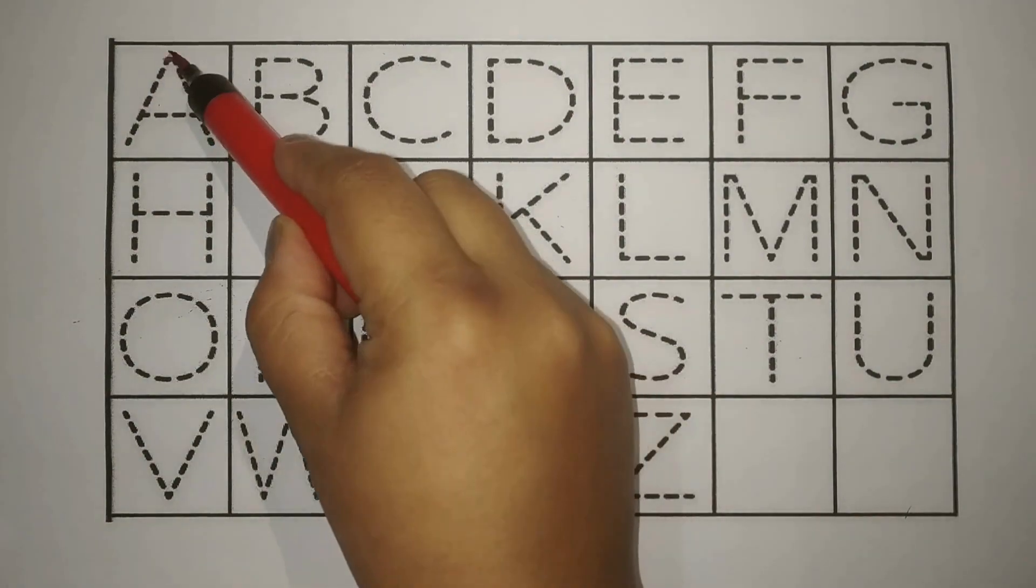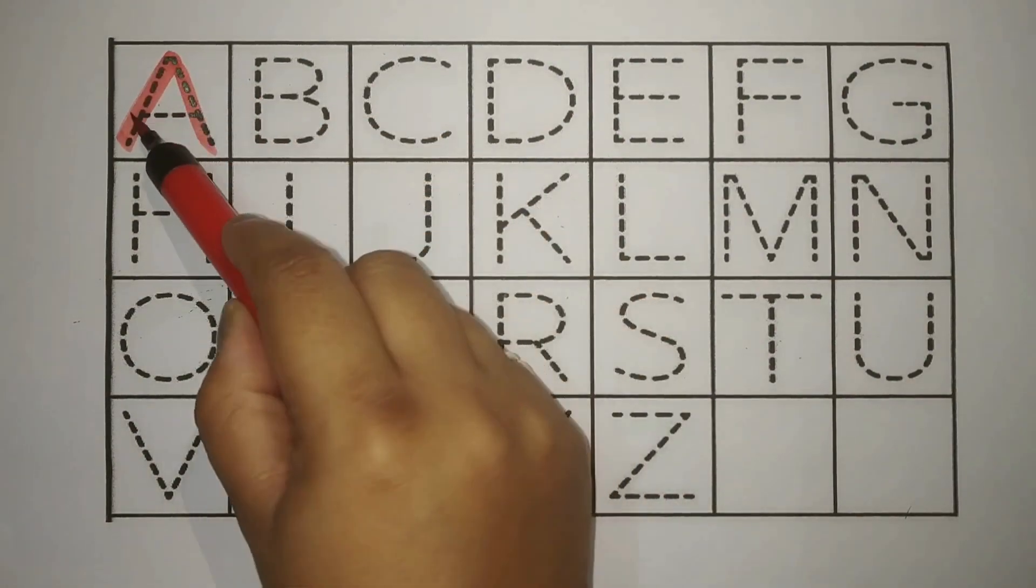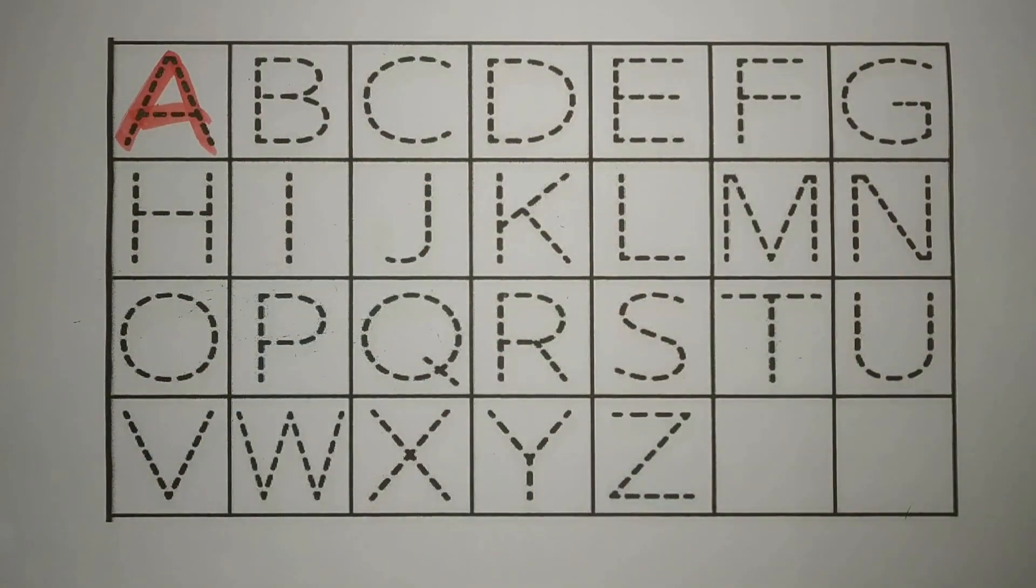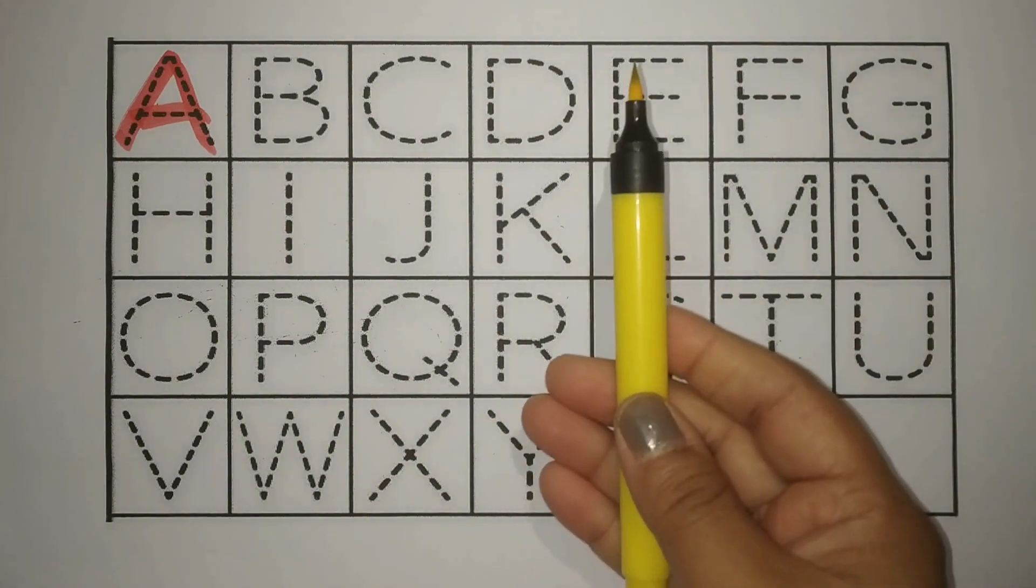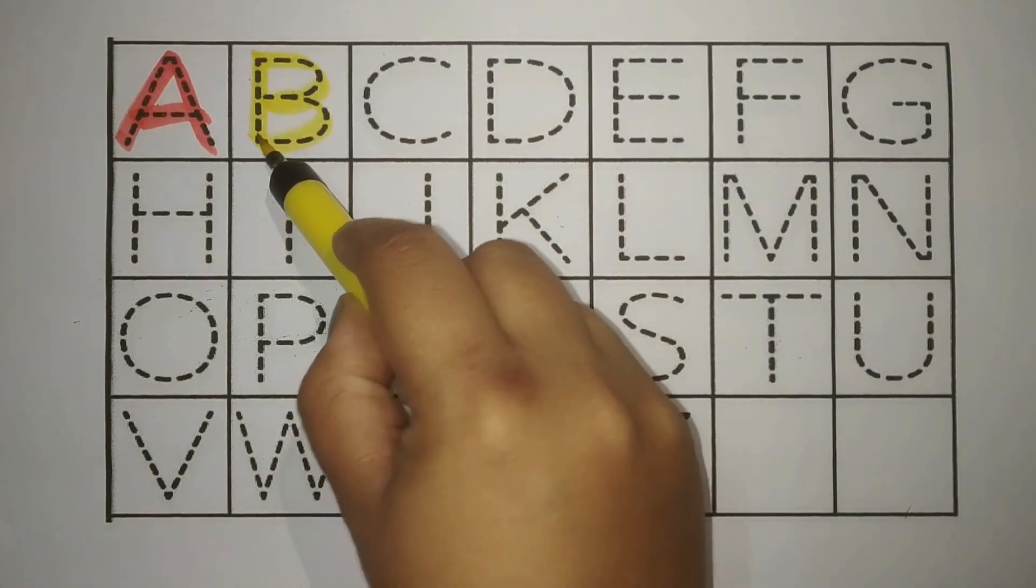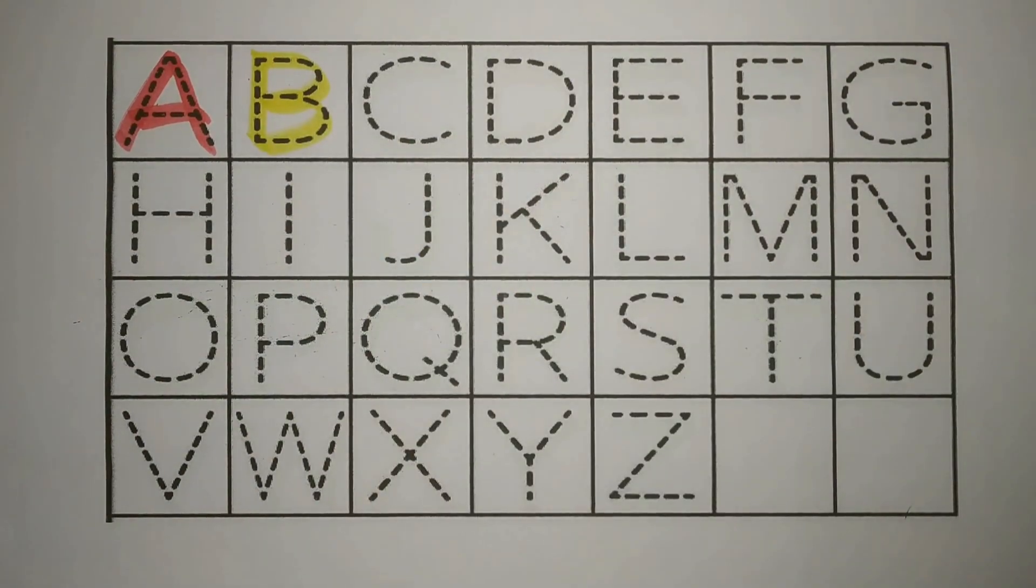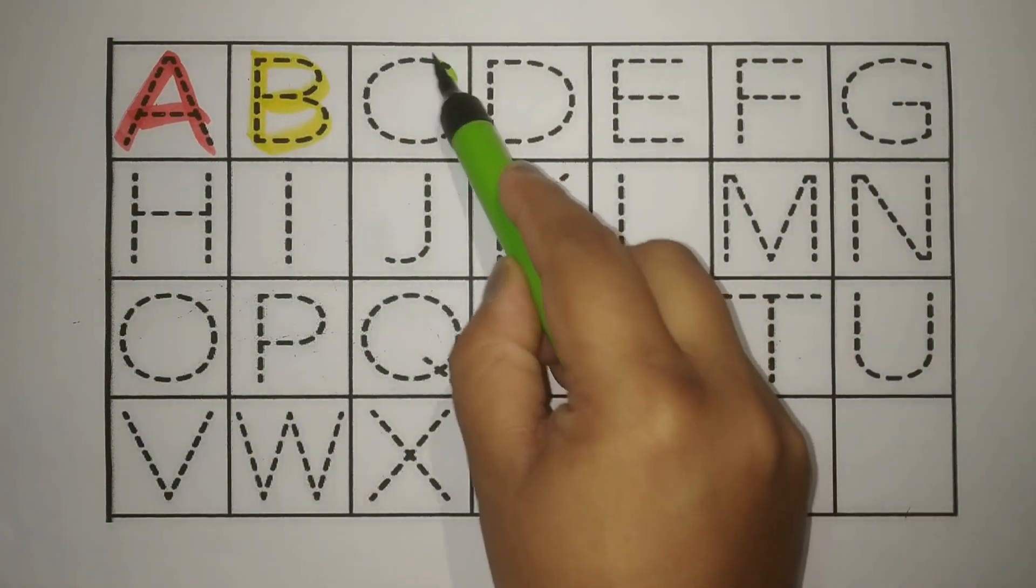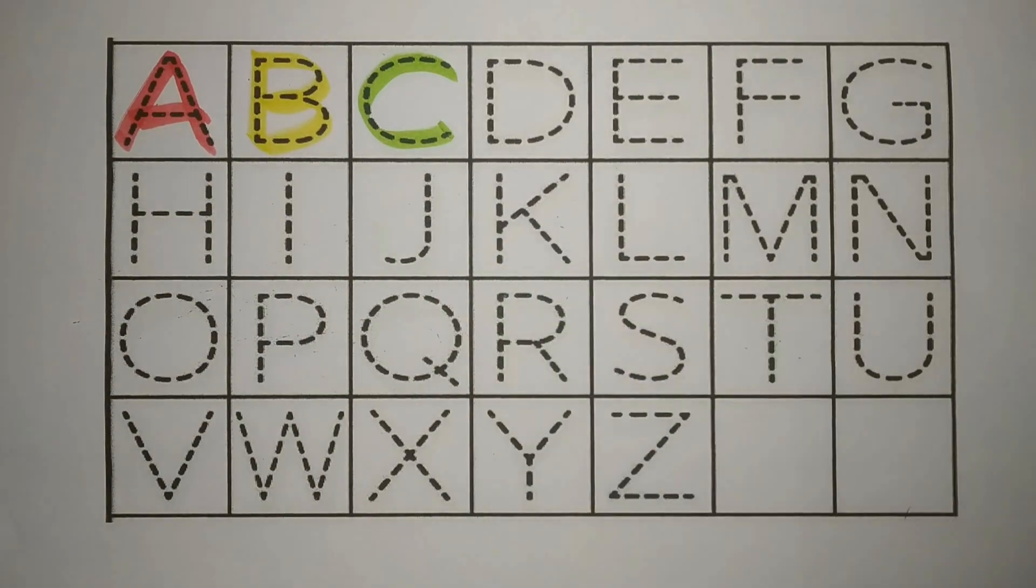Red A, A for apple. An apple a day keeps the doctor away. Yellow B, B for ball. Do you play with the ball? Green C, C for carrot, gajar.